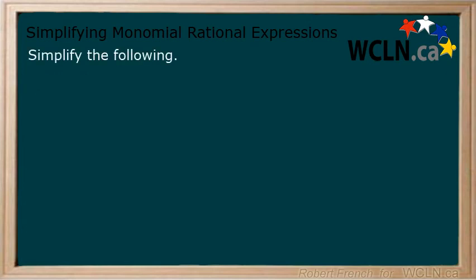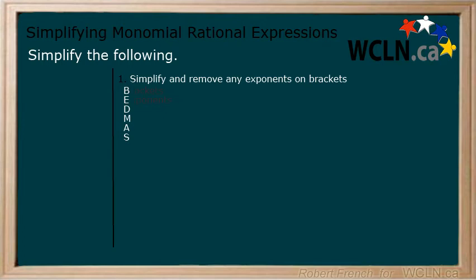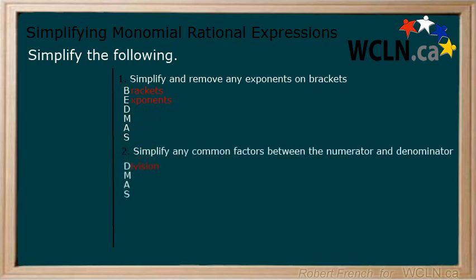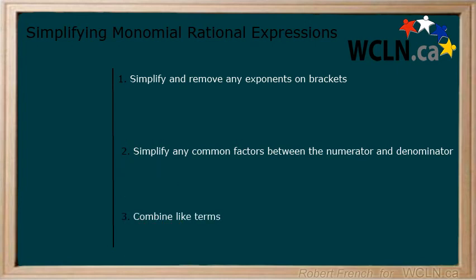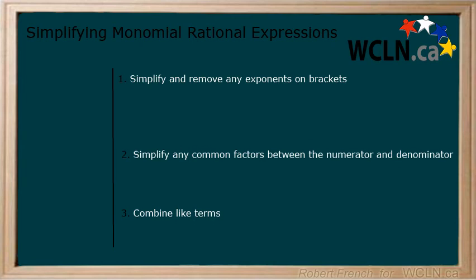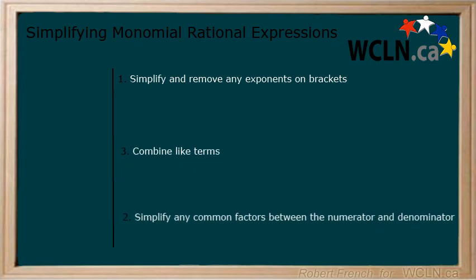Does the order of steps matter? The answer is yes and no. Step 1 must be done first. Think back to BEDMAS — brackets and exponents come first, then division and multiplication. Division corresponds to Step 2, simplifying common terms, and multiplication corresponds to Step 3, combining like terms. You can combine like terms before simplifying common factors. Sometimes it keeps the numbers and calculations smaller if you simplify before combining.